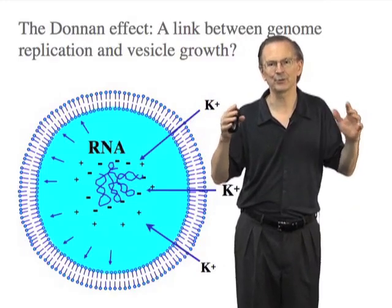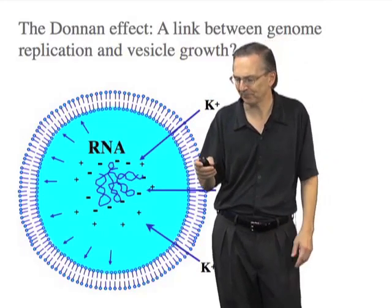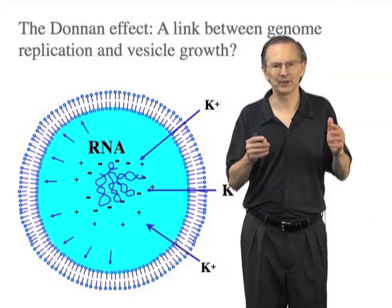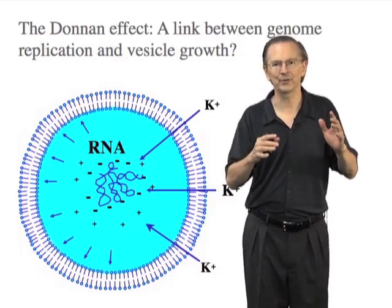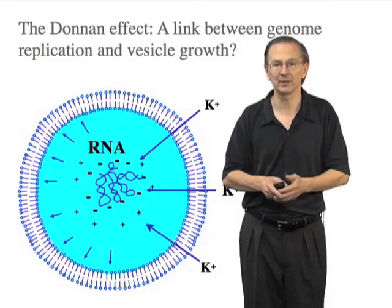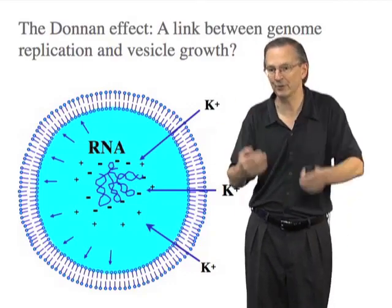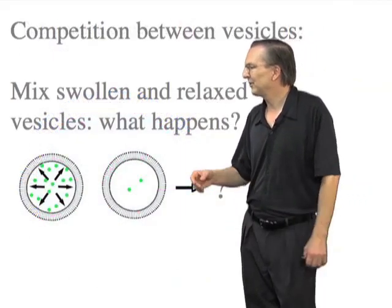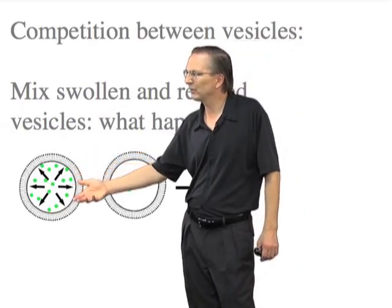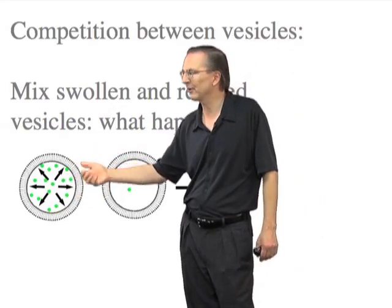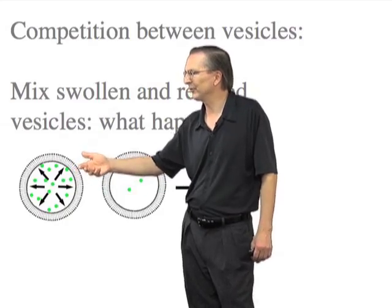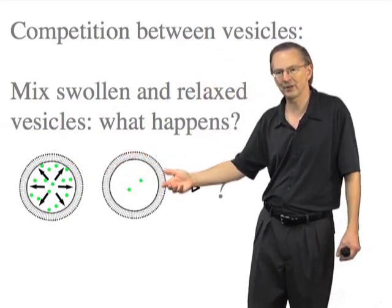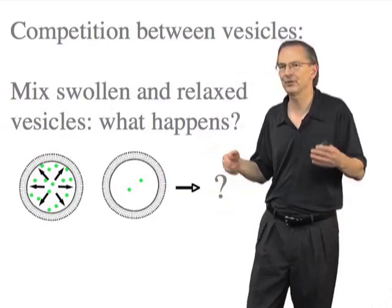We reasoned that higher osmotic pressure could drive growth competitively. To test this experimentally, we used the same fluorescence assay we had been using to monitor membrane growth following addition of new membrane molecules. In this case, we take osmotically swollen vesicles that have a lot of RNA inside and monitor their surface area following mixing with vesicles that are osmotically relaxed, asking what happens to the surface area.